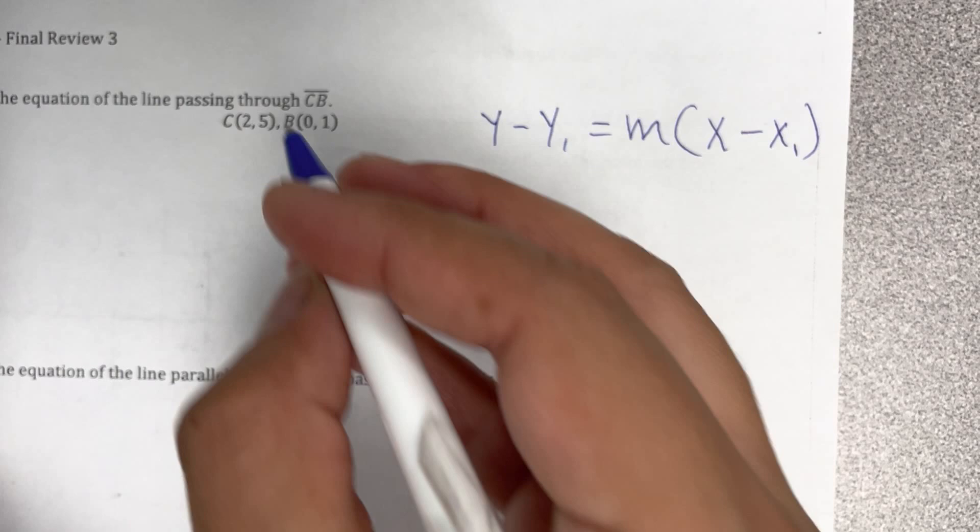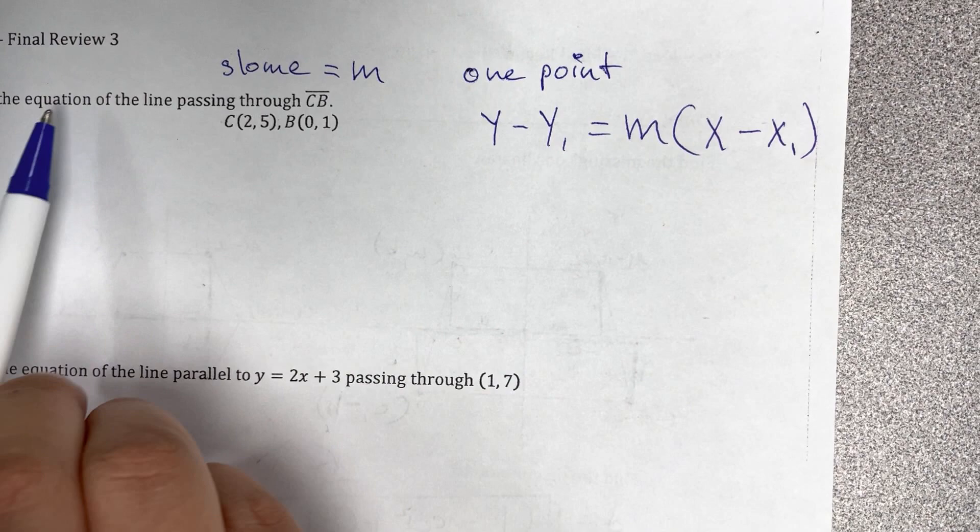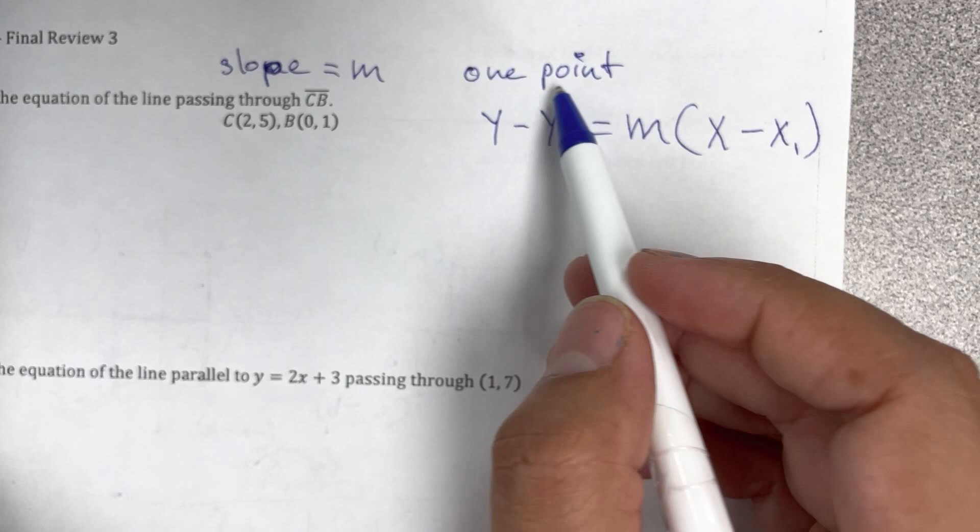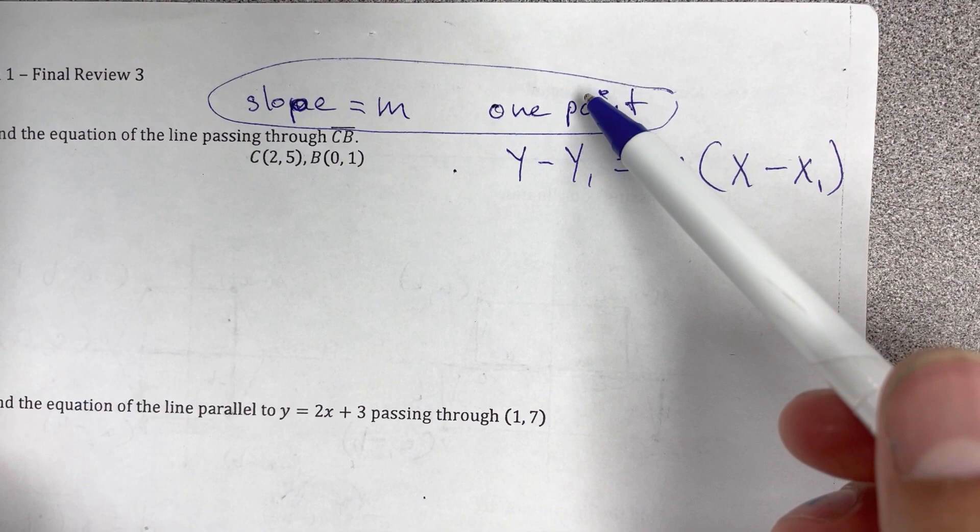You always need the slope que se representa con m y necesitamos one point. Siempre vamos a ocupar para escribir una ecuación the slope and one point. Siempre vamos a ocupar esas dos cosas. En las siguientes son muy diferentes pero en todas vamos a tener que buscar el slope que necesitamos y usar uno de los puntos que están allí o el único que está a veces.